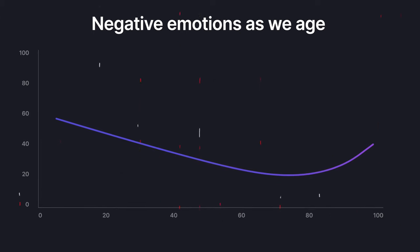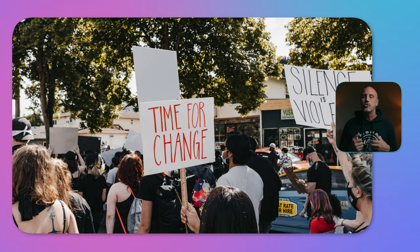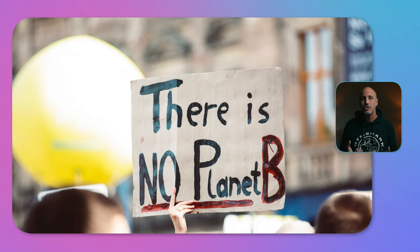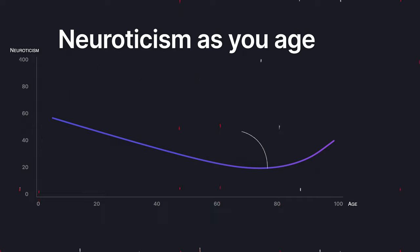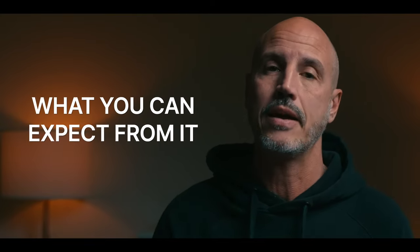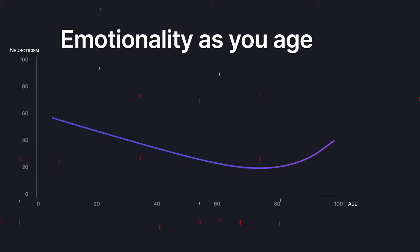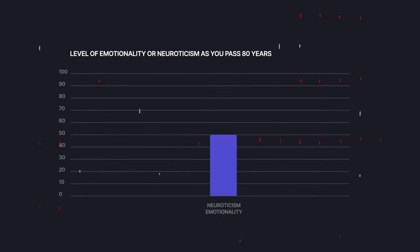You can lower your negative emotions through exposure, and people do this automatically throughout life. The data is clear that you are high in neuroticism or emotionality as a young person, because your experience is still low and you have fewer memories to construct a detailed map of the world. You see young people demonstrating against war, climate change, and capitalism due to high negative emotions. But as you get older and gain experience, your brain has a more detailed mental model and you do not worry as much. Emotionality should decrease as you age, until approximately 80 years old when we see an upward trajectory, most likely due to dementia or memory loss.